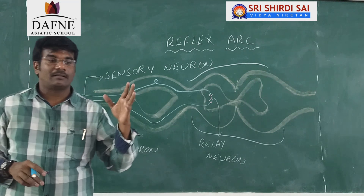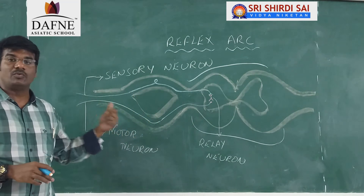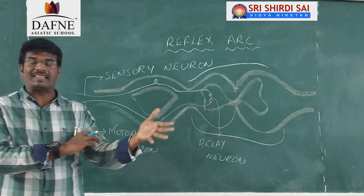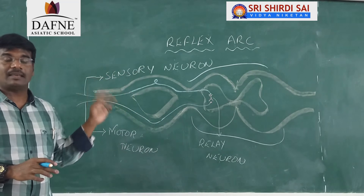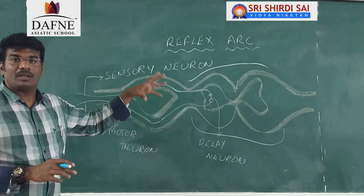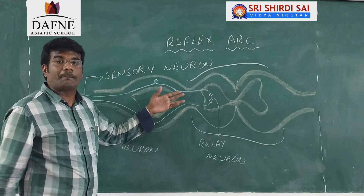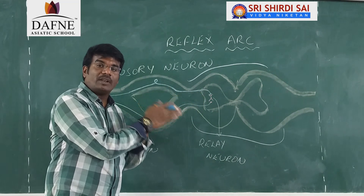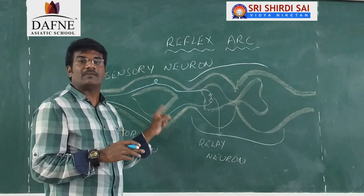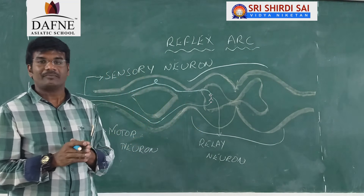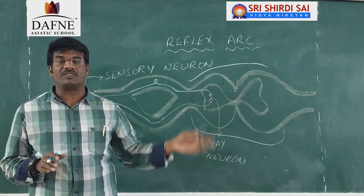From the relay neuron, the response is given out by the motor neuron, which is associated with the muscle of that particular organism. For example, if a person needs to draw their hand back, the motor neuron connects to the muscle in the arm to help the person withdraw the hand. So there are three neurons: the sensory neuron senses the information, passes it to the relay neuron, and the relay neuron transfers the response through the motor neuron — also called the efferent nerve — to the muscle.